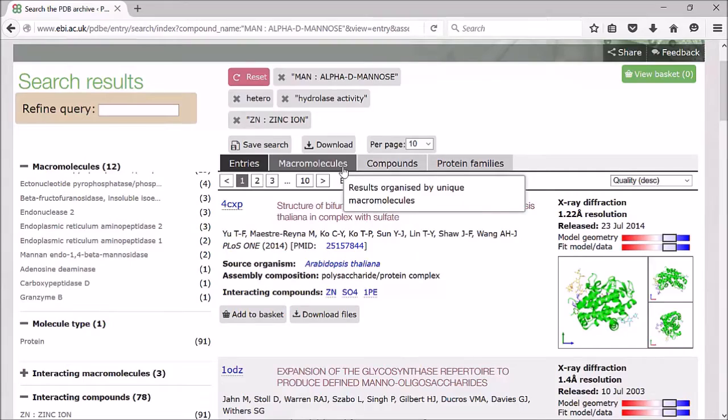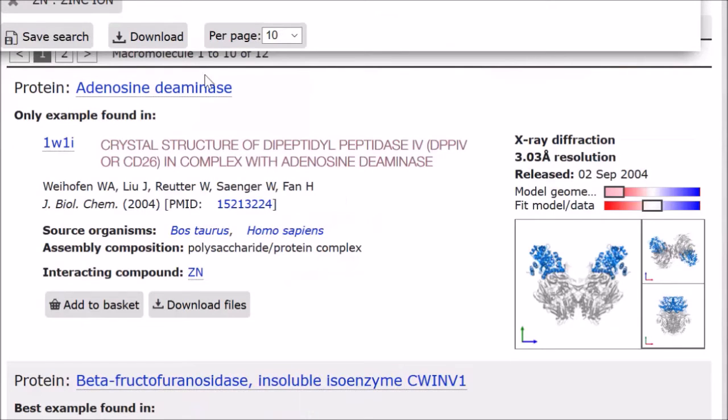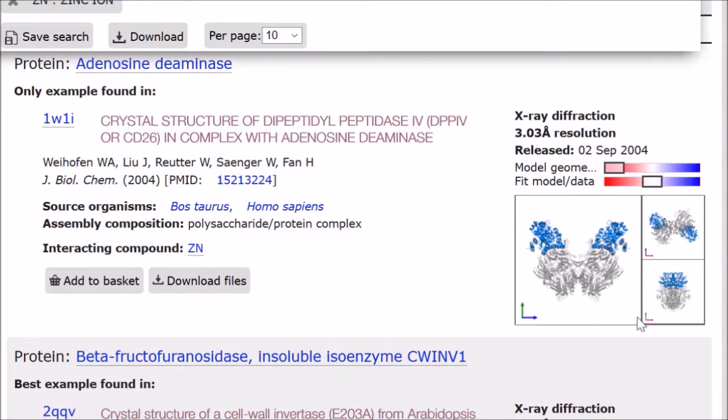If you click on the macromolecules tab, instead of sorting by entries, things are sorted by individual macromolecule. For instance, this is adenosine deaminase. In the image on the right, it will show where this individual macromolecule is within that entry.